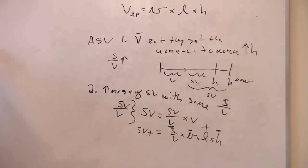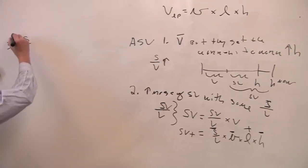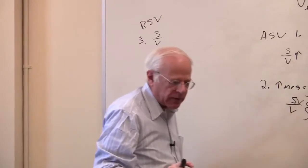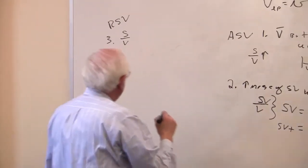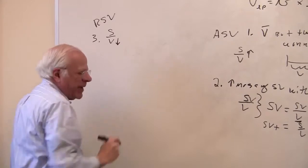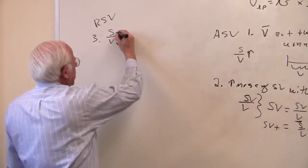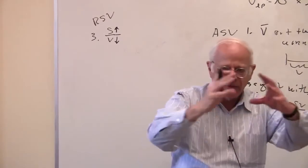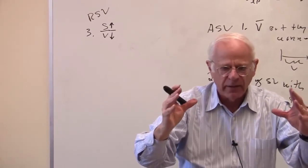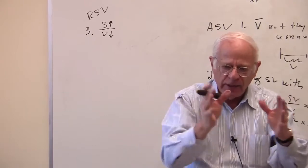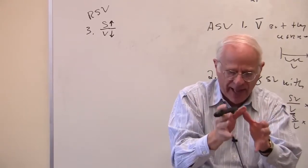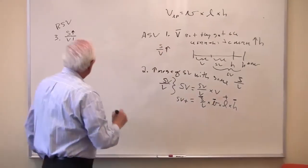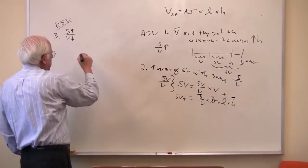The third example is called relative surplus value. Marx spends a lot of time on this one. Relative surplus value is an example in which the value of labor power falls and the surplus rises. Remember our theory: the workers are producing a value added, and they only get a share of that. So if you reduce the value of labor power, the total surplus rises — and Marx calls that relative surplus value.